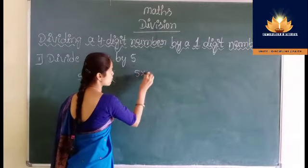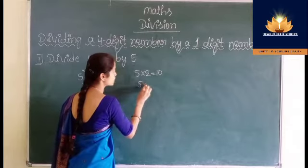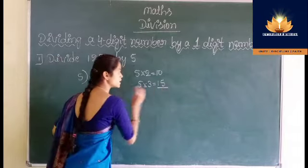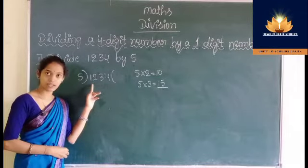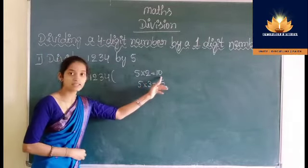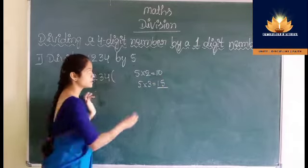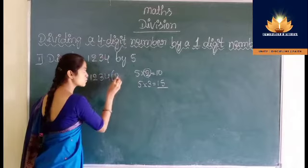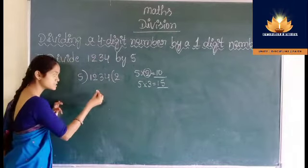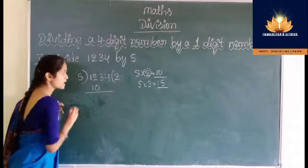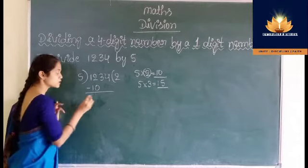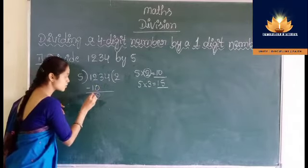The product 15 is greater than 12. That is why we have to consider 5 twos are 10. So write 2 in place of the quotient. Then write the product, that is 10, below this 12. Now subtract 10 from 12: 2 minus 0 is 2, 1 minus 1 is 0.